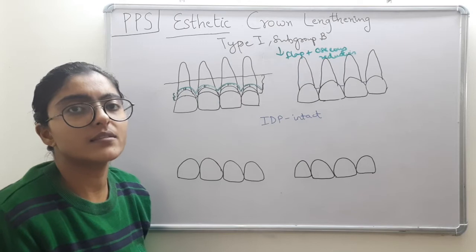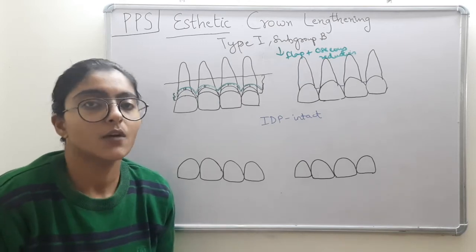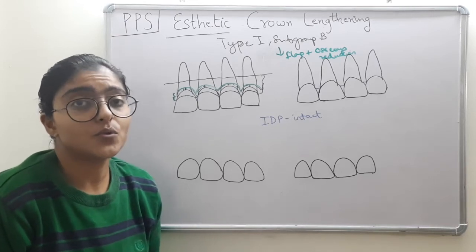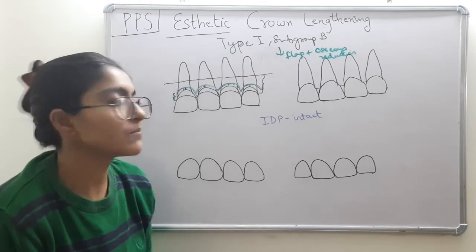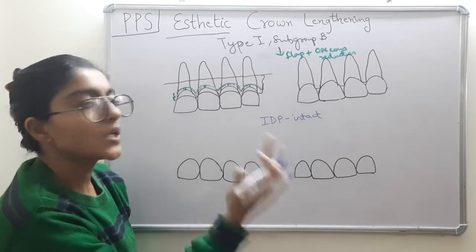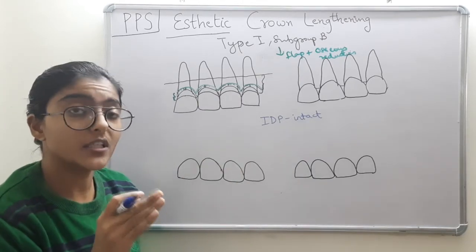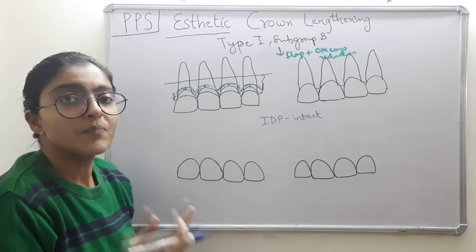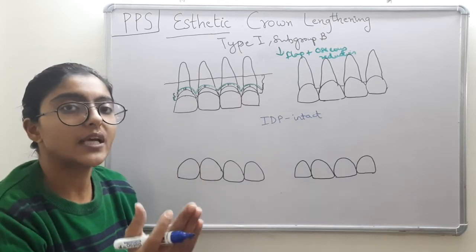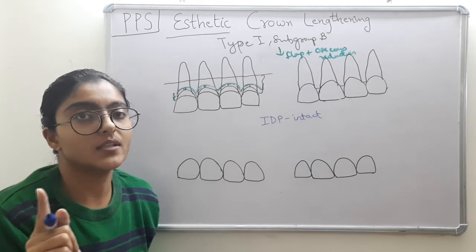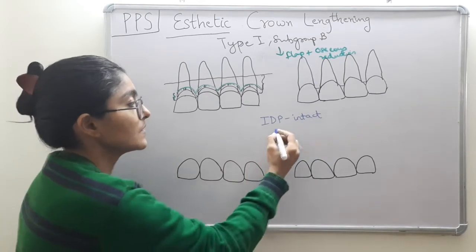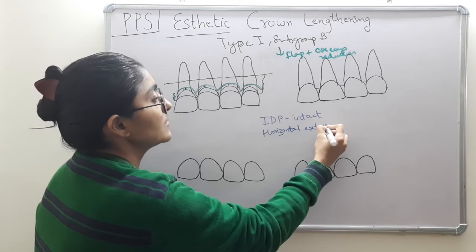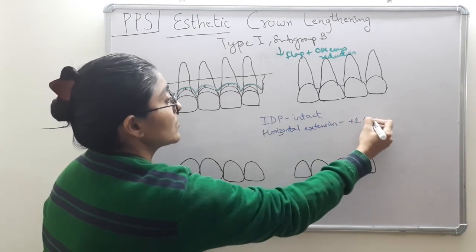Regarding horizontal extension: usually anteriors are canine-to-canine, but the smile varies from person to person — typically premolar to premolar, sometimes including molars. Decide the horizontal extension of the smile for that patient. If they show premolars to premolars, the incision extends one additional tooth on both sides — so from second premolar to second premolar.